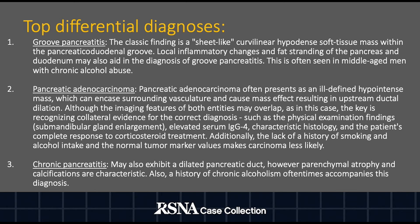Groove pancreatitis: the classic finding is a sheet-like, curvilinear hypodense soft tissue mass within the pancreatic duodenal groove. Local inflammatory changes and fat stranding of the pancreas and duodenum may also aid in the diagnosis of groove pancreatitis. This is often seen in middle-aged men with chronic alcohol abuse.